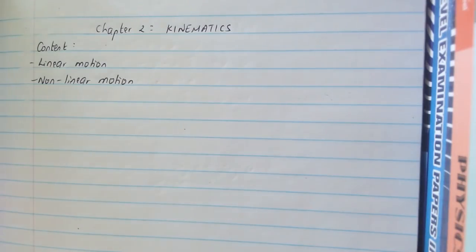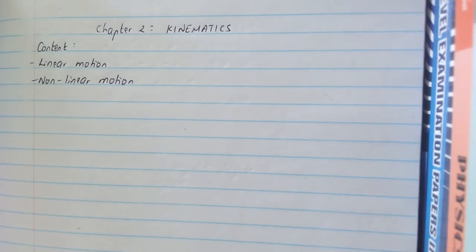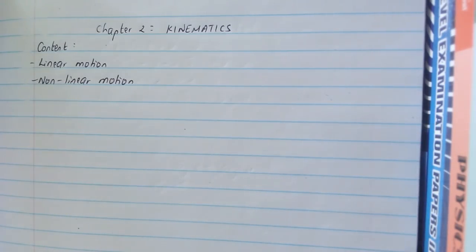The main contents of this chapter are about linear motion and nonlinear motion, and we're going to be working according to Cambridge learning outcomes. The first part is about defining displacement, speed, velocity, and acceleration.